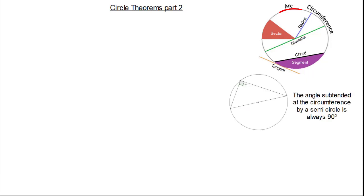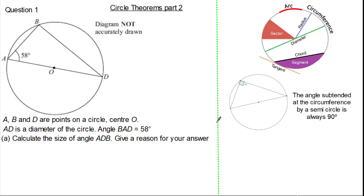So now we have our next circle theorem. Let's apply it to a simple question. The question states points A, B and D are points on a circle with centre O. We know AD is the diameter of the circle and we know angle BAD is 58 degrees. The question asks us to calculate angle ADB and we must give a reason for our answer. Now you know our circle theorem — why don't you give it a try? Press pause if you need.